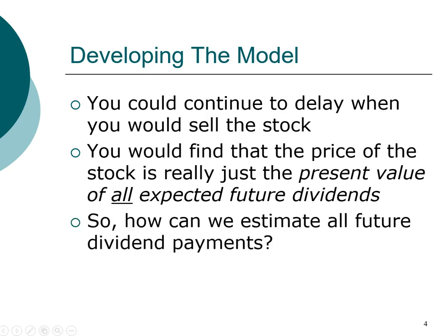The challenge becomes forecasting all future dividends. One important characteristic of stocks is that there's no end date — a company could in theory last forever. Companies like Coca-Cola have paid dividends consistently for many years, and there's no reason to assume they won't continue for another 50 to 100 years. To address this, we need to make simplifying assumptions. In the next video, we'll go over special cases of those assumptions that enable us to value a stock.